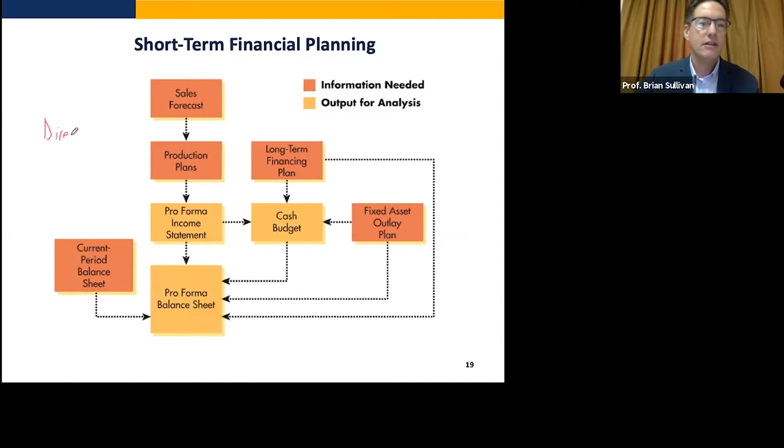Like say we're making t-shirts, we need to buy the cotton and the material. And that's going to be determined by how many we're planning to sell.